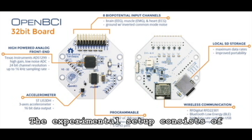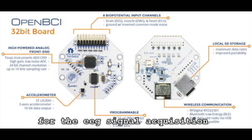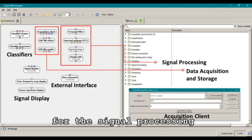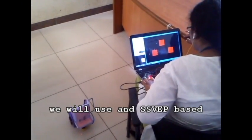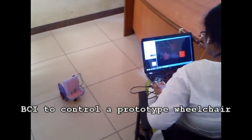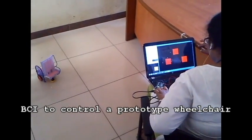The experimental setup consists of the OpenBCI board for the EEG signal acquisition and OpenVIPE software for the signal processing and classification. In this demo, we will use an SSVEP based BCI to control a prototype wheelchair.